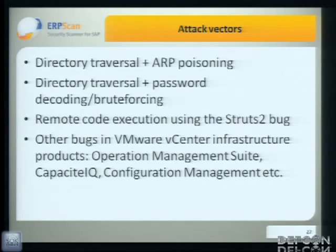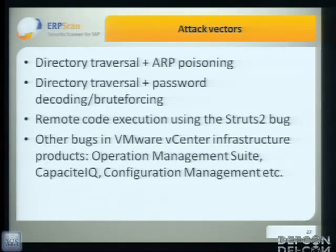So there are four vectors to attack vCenter: directory traversal with ARP poisoning; directory traversal with password decoding; and remote code execution using the Struts bug. Also, there are many infrastructure products around vCenter — like Operations Management Suite, Capacity, and Configuration Management — and they all have some sort of credentials for vCenter, so there may be additional vulnerabilities in those systems.